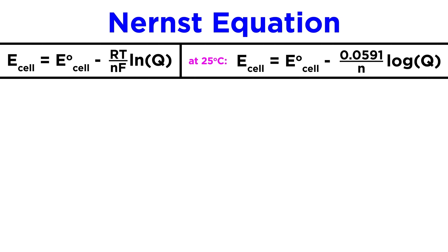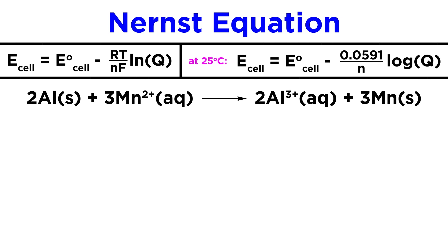Let's apply this to an example, where aluminum metal and manganese 2 plus produce aluminum 3 plus and manganese metal. This has a standard cell potential of 0.48 volts. But what if the manganese ion and aluminum ion concentrations are 0.5 molar and 1.5 molar respectively?